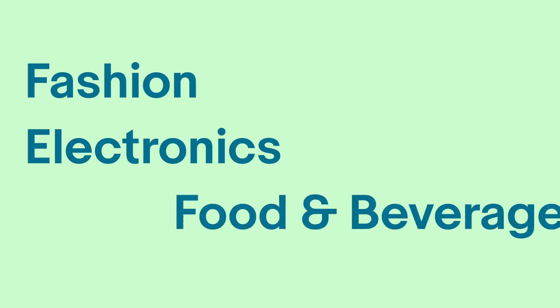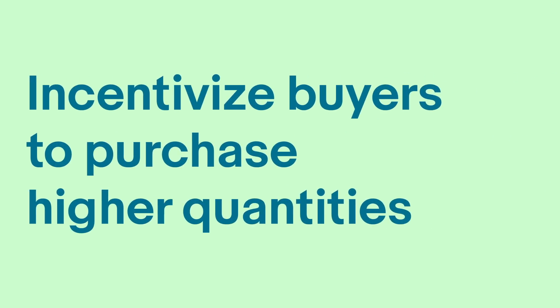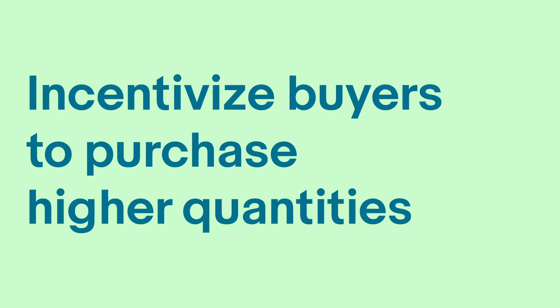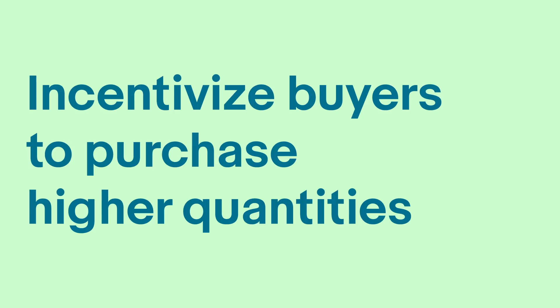We know that customers regularly purchase multiple quantities of the same item. We see this among fashion, electronics, and food and beverage categories especially. Volume Pricing is now available to store subscribers in Promotions Manager, making it easier than ever to sell in bulk. Volume Pricing works by incentivizing your buyers to purchase higher quantities of the same item. Your buyer selects multiple units with one click and the reduced price is automatically applied.